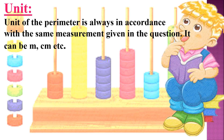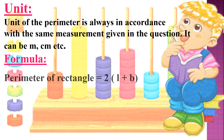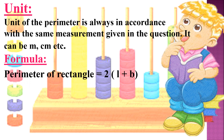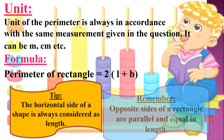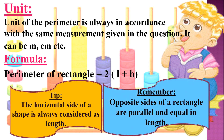We use a formula to find the perimeter of a rectangle because it is a regular shape. Perimeter of rectangle equals 2 into (L plus B). A tip: the horizontal side of a shape is always considered as length. Remember, opposite sides of a rectangle are parallel and equal in length.